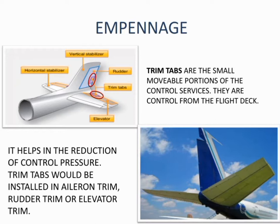Trim tabs are small movable portions of the control surfaces. They are controlled from the flight deck, also known as the cockpit. Trim tabs help in the reduction of control pressure, and they can be installed at the aileron trim, rudder trim, or elevator trim.